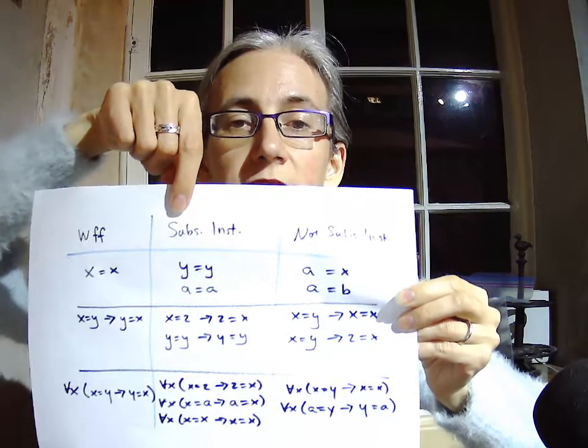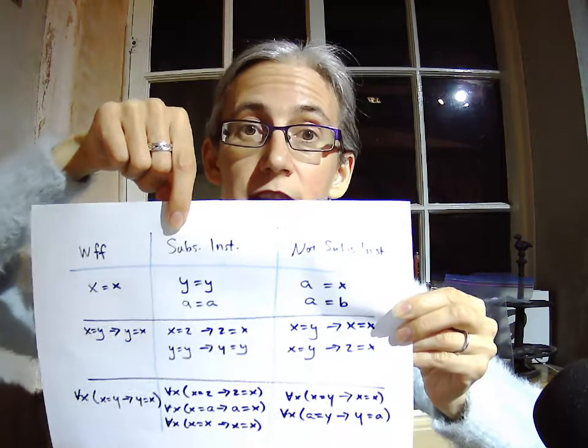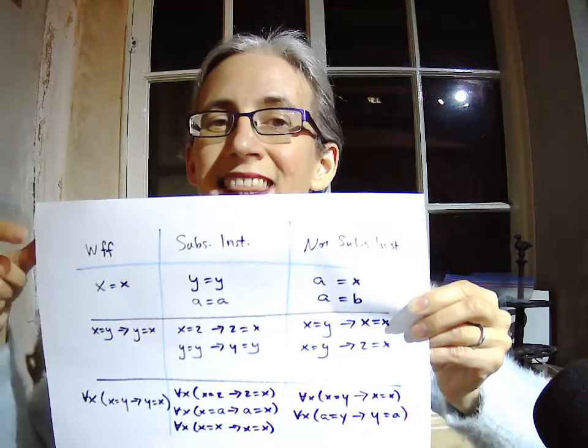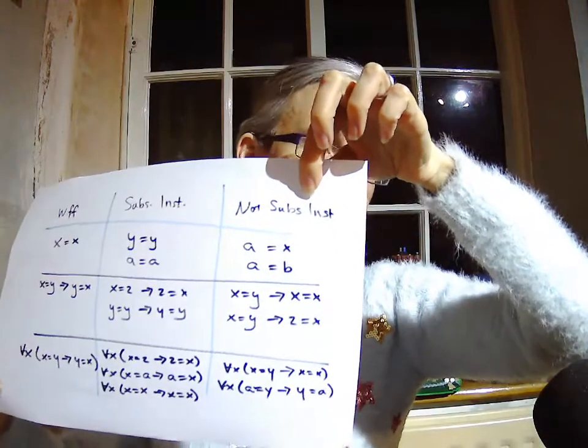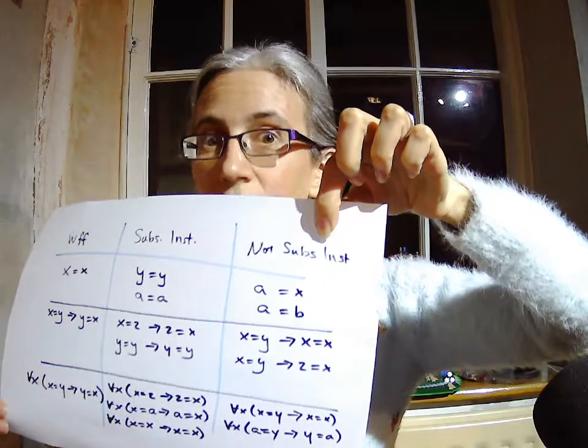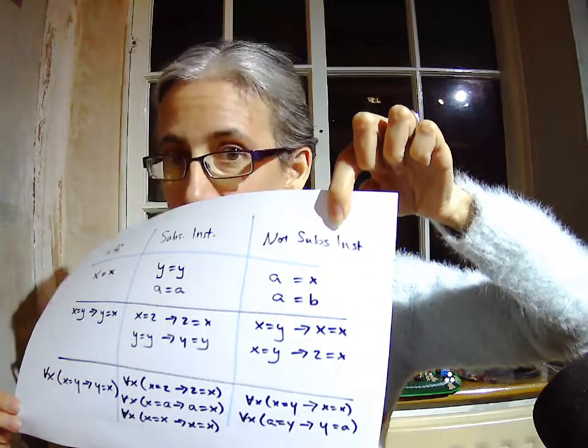In the middle column we have things which are substitution instances — you can double check this by comparing against the definition given in the previous video. In the last column we have things that are not substitution instances. I'll leave it as an exercise for you to figure out why they aren't, but I will give you a hint: it has to do with the fact that substitution as a procedure in logic is often identified as uniform substitution. Let that be a clue.